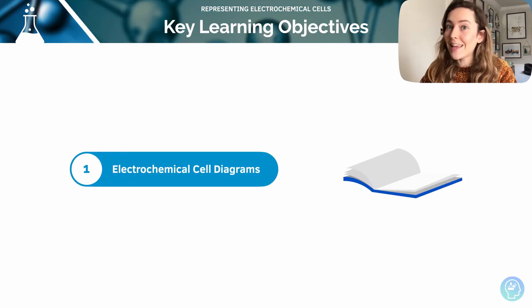So our key learning objectives for this lesson are to look at electrochemical cell diagrams and also the notation for those.